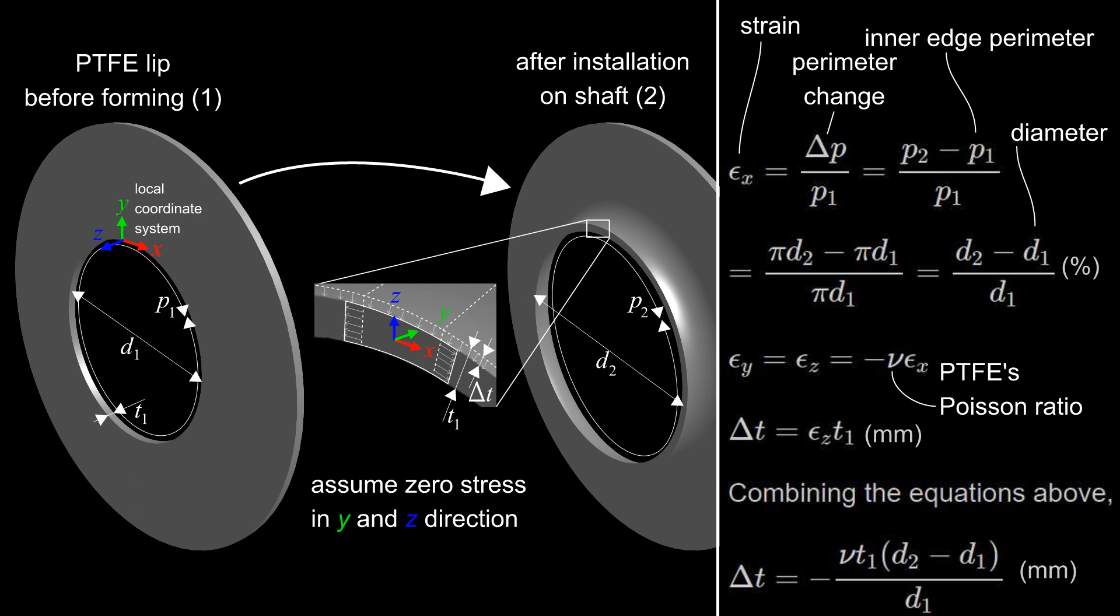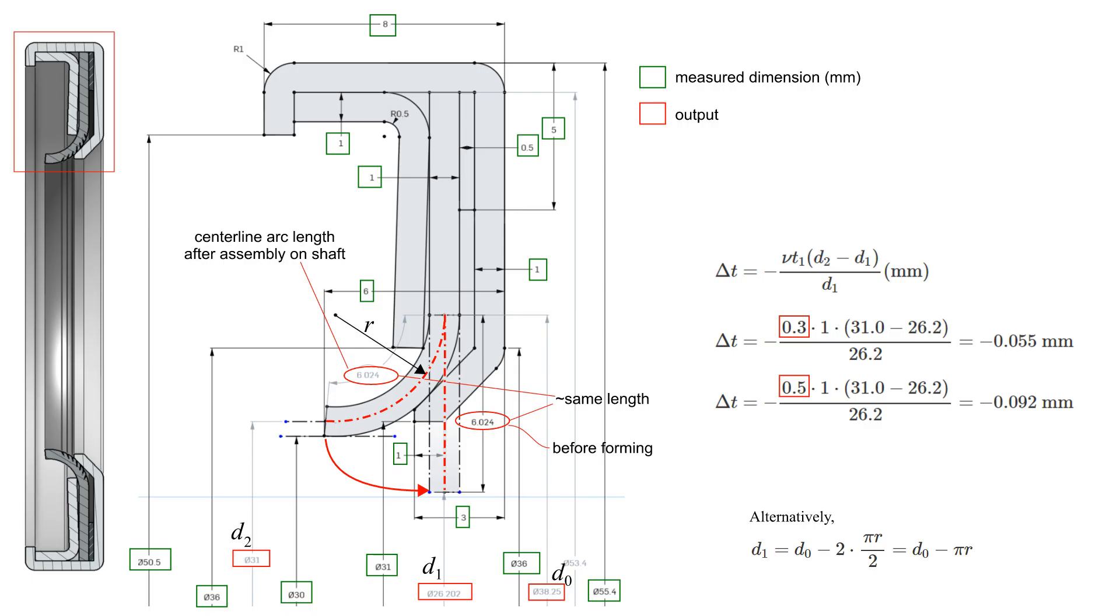Before the equation can be used, we have to estimate the inner diameter D1 before forming. For this purpose I measured various seal dimensions and approximated the seal cross section to consist of only lines and arcs.